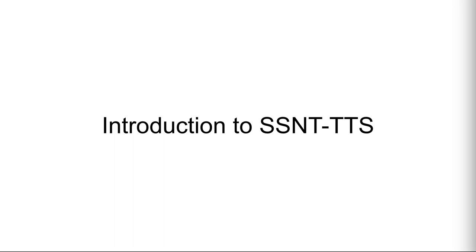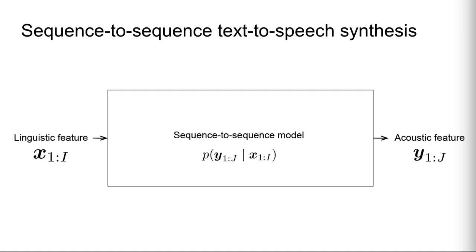First, we will introduce SSNT-TTS. Sequence-to-Sequence TTS is a TTS method that directly predicts acoustic features from text. Unlike a pipeline TTS method that consists of multiple models, the Sequence-to-Sequence method is a single model that can implicitly run alignment between input text and output acoustic features.